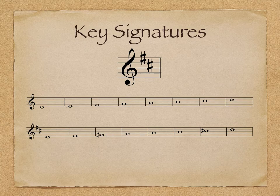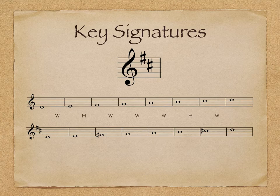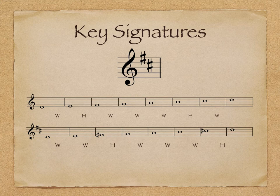We can build a major scale on any tone, but we must adhere to the pattern of half and whole steps starting from scale degree 1. For example, if we used the note D to start a scale using only the white notes of the piano, it would sound like this and have this step pattern — but not quite what we're looking for. In order to make it a major scale, we must raise the 3rd and 7th scale degree by a half step. Raising the tone by a half step uses the sharp sign. If we needed to lower the tone by a half step, we would need to use a flat sign.